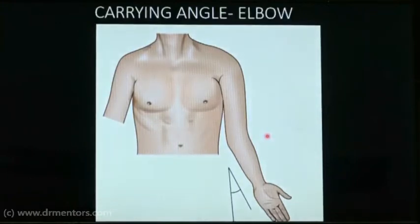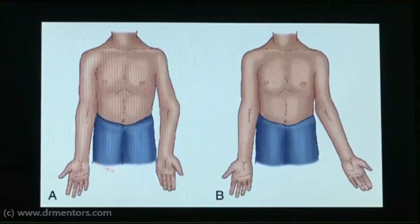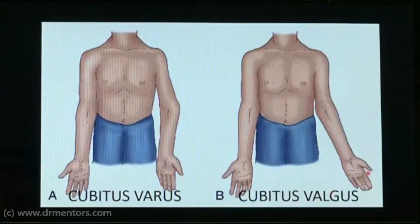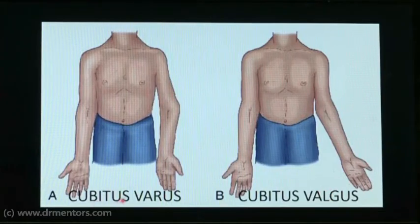Coming to the complications of supracondylar fracture humerus, you should know what a carrying angle is. The carrying angle is calculated at the elbow. If the angle is deviated and opening medially towards the body, that is cubitus varus. If the angle is opening outside, that is cubitus valgus. Cubitus varus is a complication of supracondylar fracture humerus, and cubitus valgus is a complication of lateral condyle fracture of humerus. Remember: valgus has 'L' for lateral condyle, and varus is supracondylar.